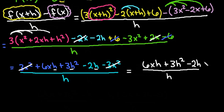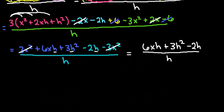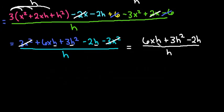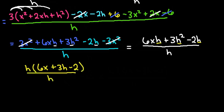Okay. And you could go through and cancel all of the h's out, or what you can do also is because all of these have an h in common, I'm going to undistribute the h. So I'm going to take an h out, so I would be left with 6x plus 3h minus 2 all over h. And these would cancel out.